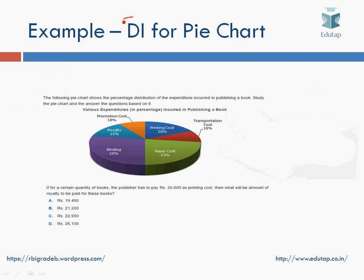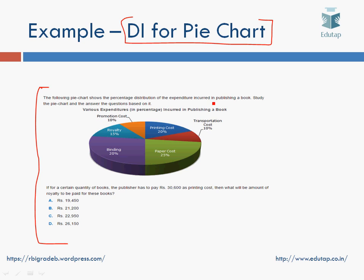Here is an example of a data interpretation question based on a pie chart. It shows various costs a company incurs on publishing a book: royalty 15%, binding 20%, and so on. The question asks: if a publisher has to pay 30,600 as printing cost, what will be the amount of royalty to be paid? This is a typical type of question based on pie chart DI.